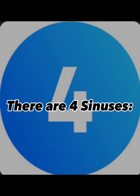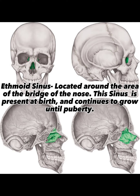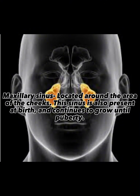There are four sinuses. The ethmoid sinus is located around the rear of the bridge of the nose. This sinus is present at birth and continues to grow until puberty. The maxillary sinus is located around the rear of the cheeks. This sinus is also present at birth and continues to grow until puberty.